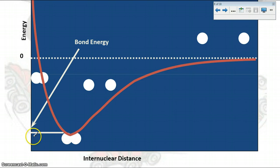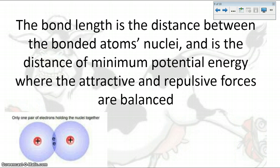This point on the graph tells us our bond energy. To summarize: the bond length is the distance between the nuclei in the bond — it is the distance of minimum potential energy, where attractive and repulsive forces are balanced.